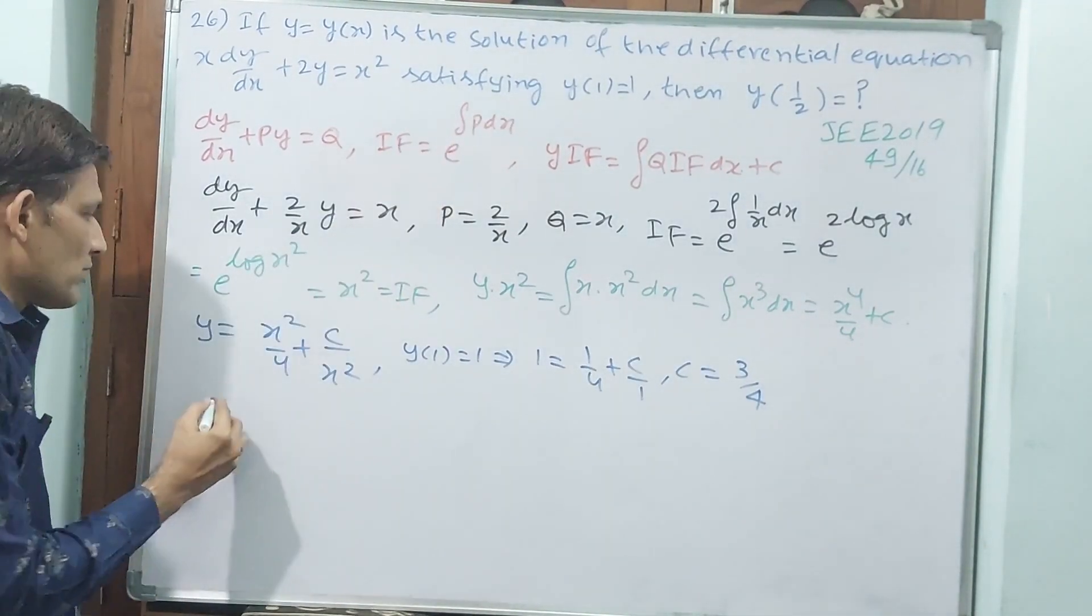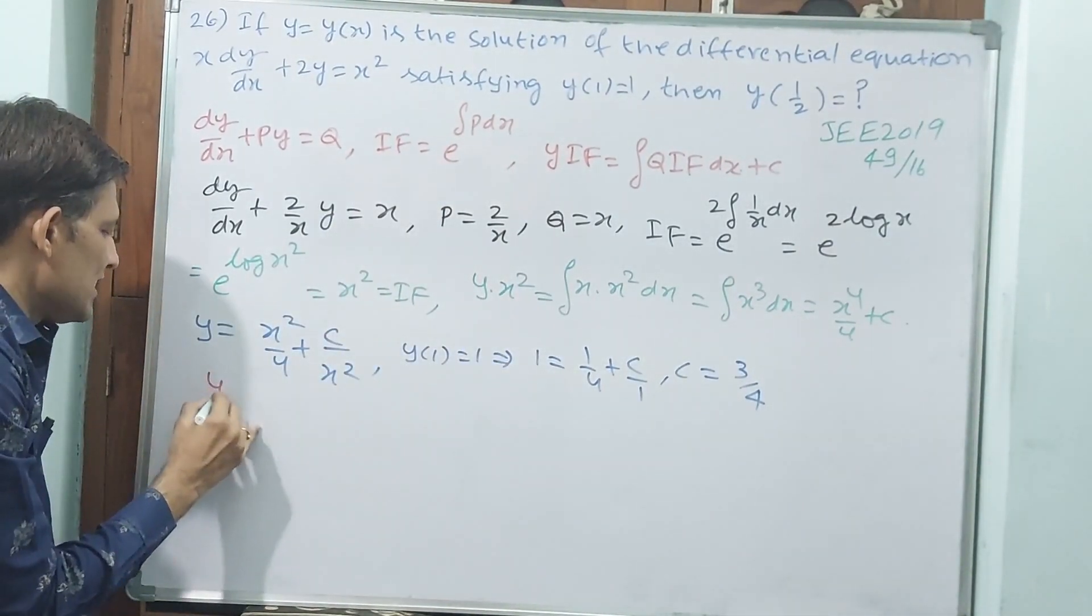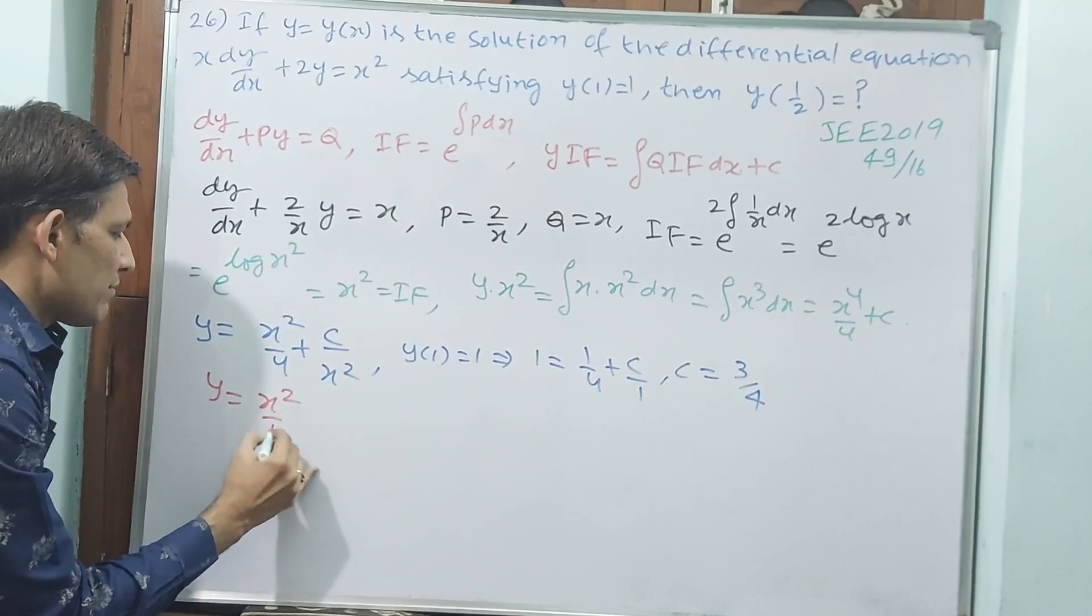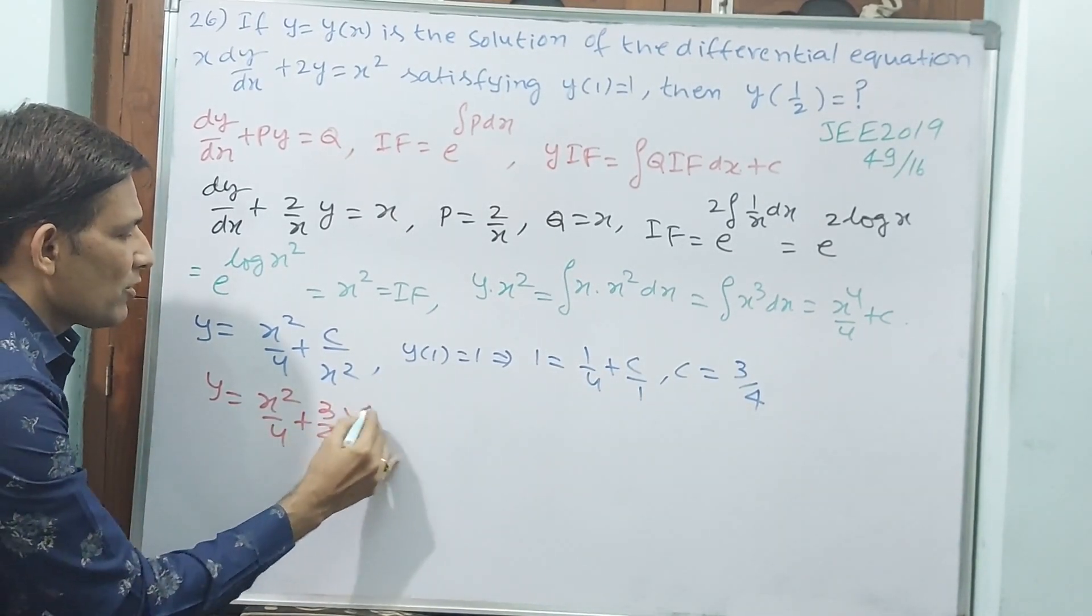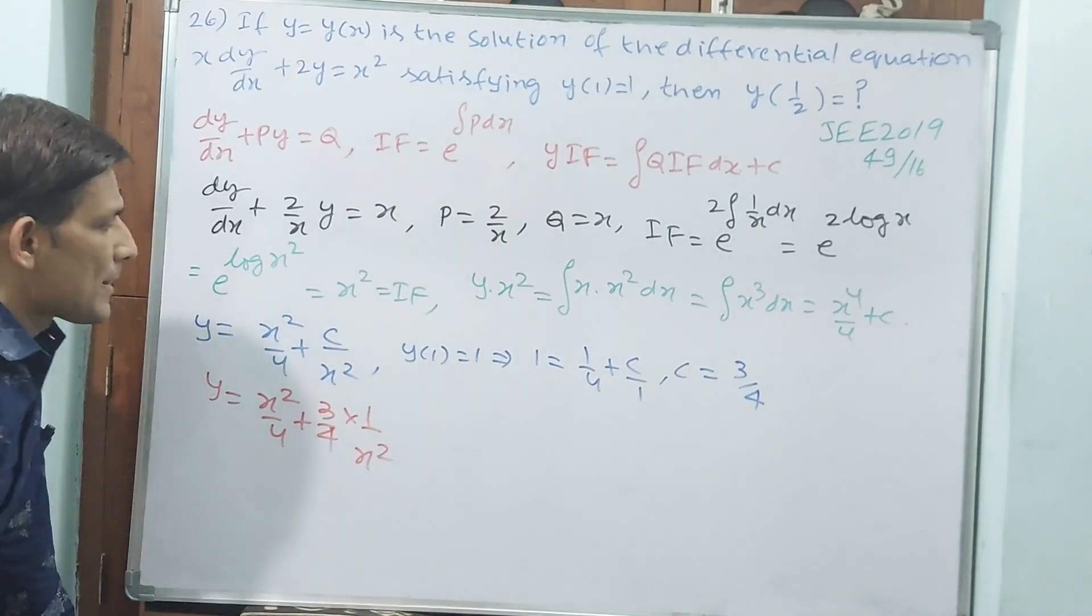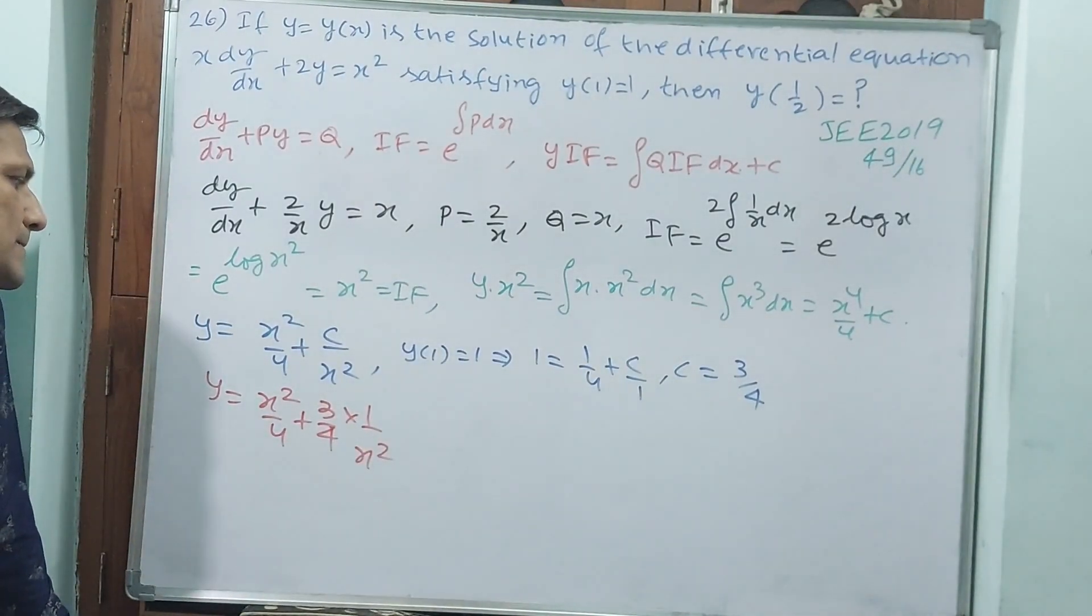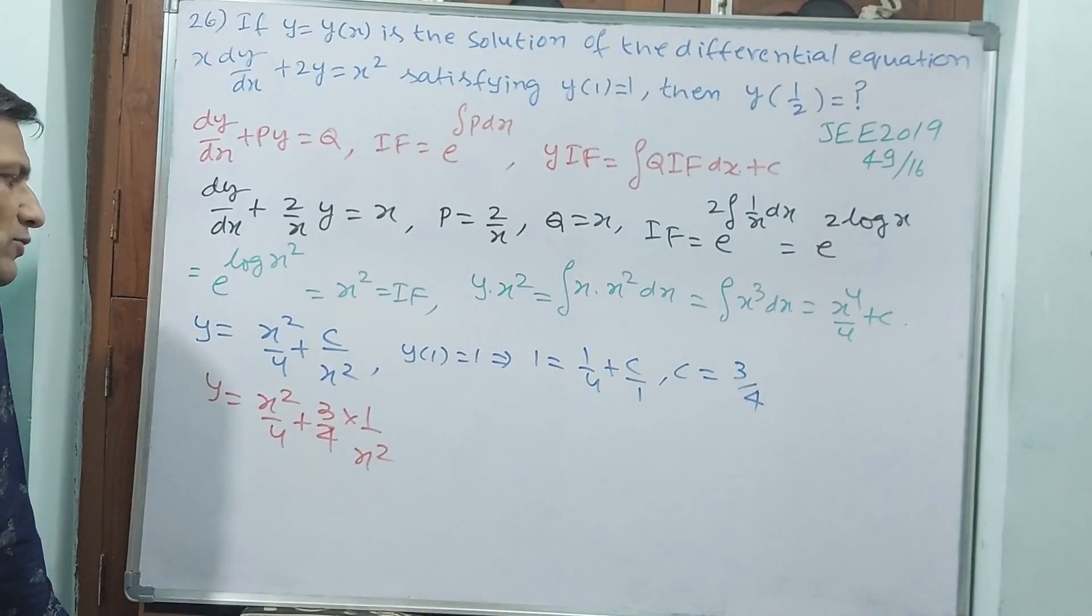y of 1 by 2, right? First you substitute this. y equals x square by 4 plus 3 by 4 into 1 by x square. Or 3 by 4 x square. Both are same.